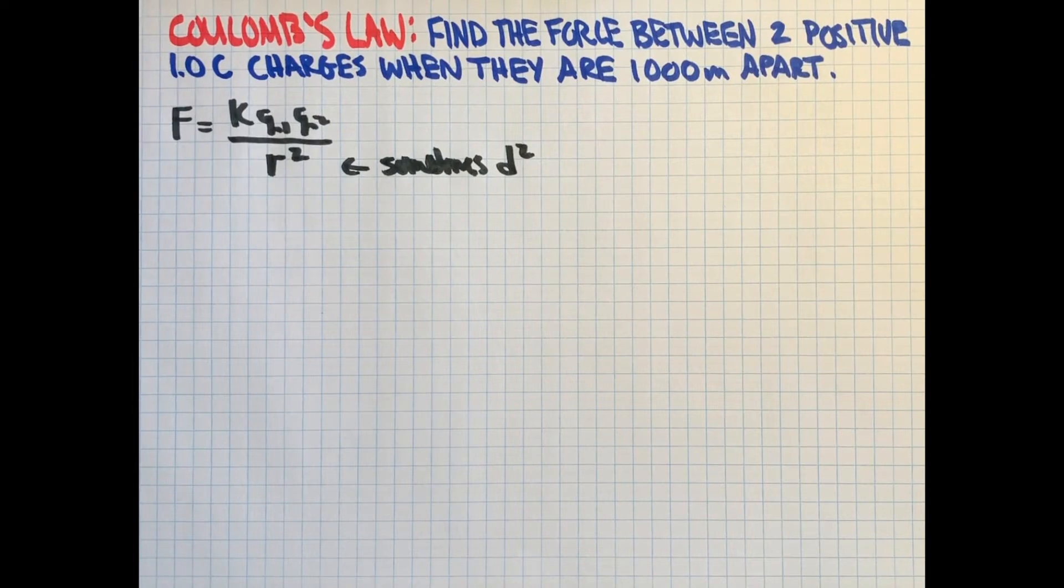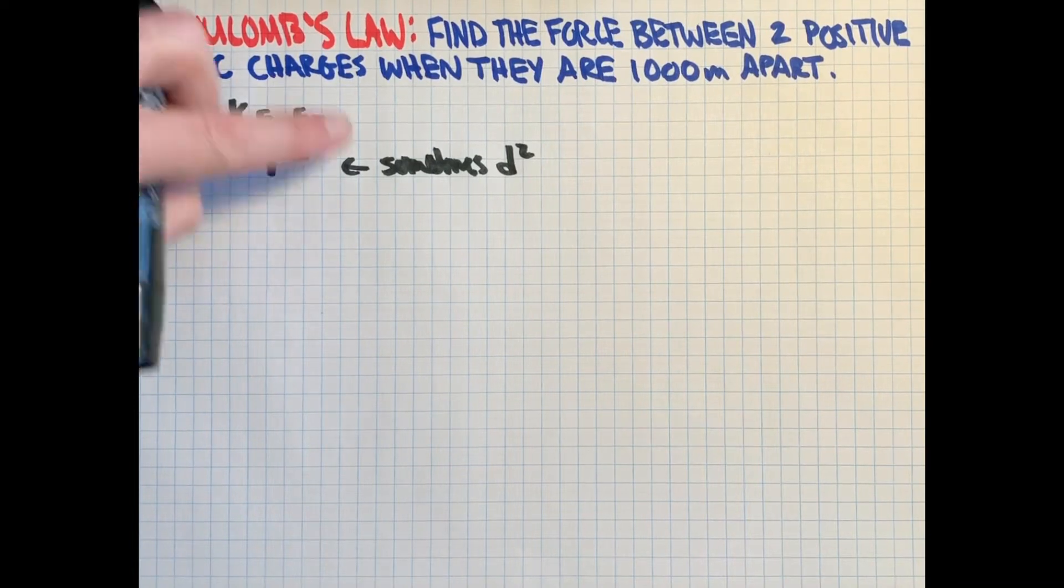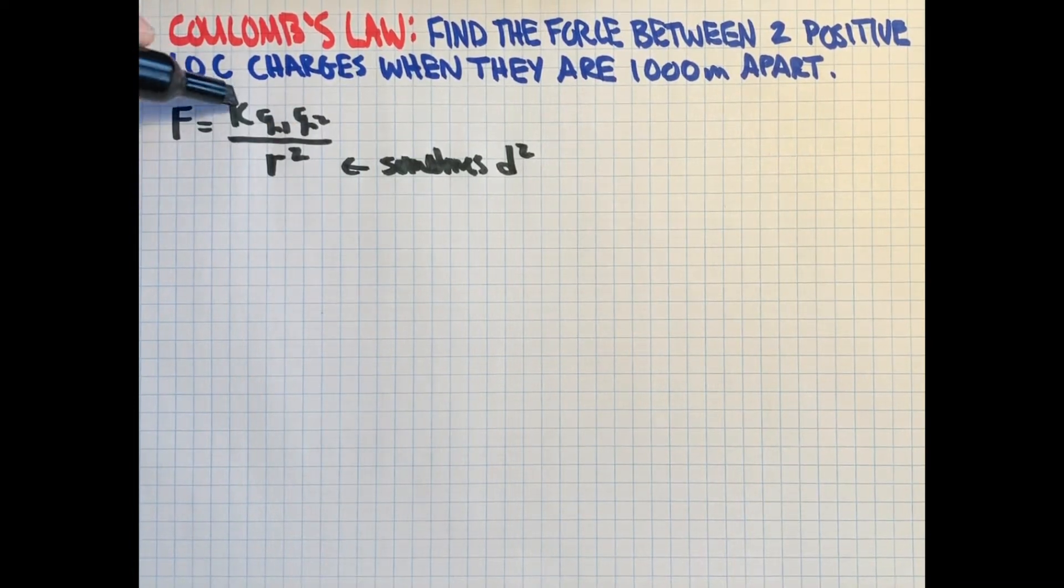R I like to use because it looks similar to the universal gravitation equation. K is really just the G in this case. Q1 and Q2 are the masses, and R squared stays the same. But you will see sometimes D squared, it's the same thing. It's just the distance between them.